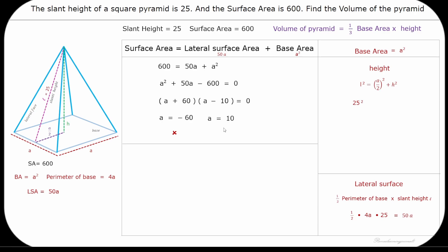So the base length of this pyramid is 10. To find the volume of the pyramid, we need to find the height of the pyramid. In the Pythagorean theorem, substitute the value of the slant height L and base length A and solve for height.